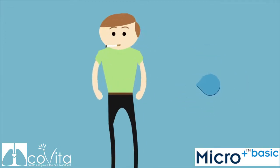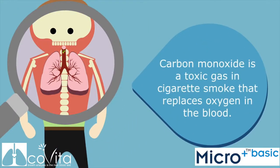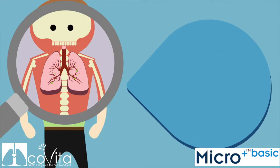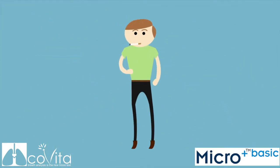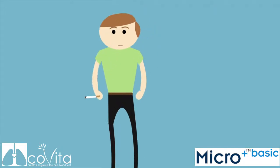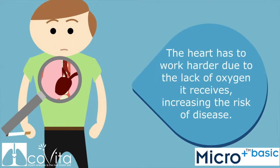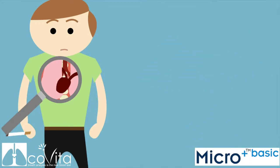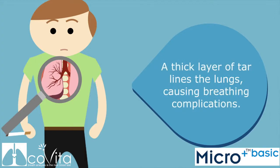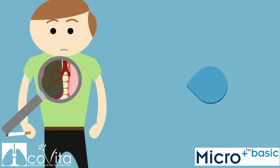Oxygen is carried around the body by red blood cells, and when you inhale smoke from a cigarette the CO is absorbed into your blood through the lungs. Because CO binds with haemoglobin 200 times more readily than oxygen, your body is starved of oxygen.